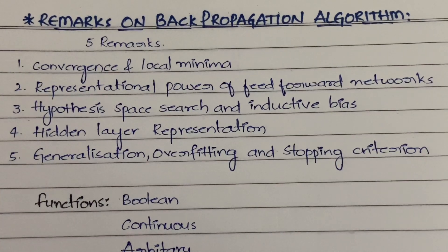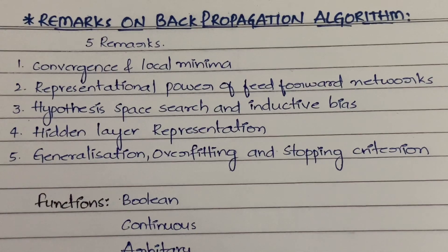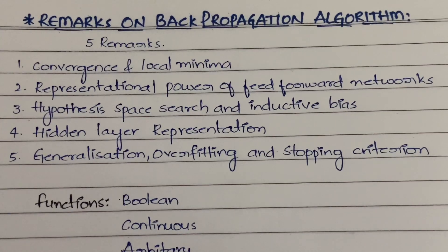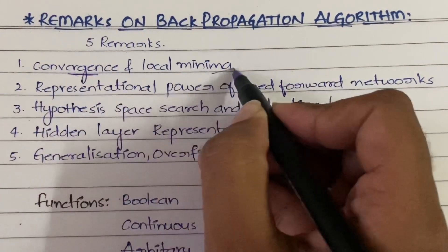The first remark is convergence and local minima. Backpropagation is a multi-layer algorithm that supports multi-layer neural networks where you can go back and change the weights. Convergence means all the neurons are interconnected to each other — they meet up at a point. Because of this interconnection, information is passed to each and every neuron very fast.